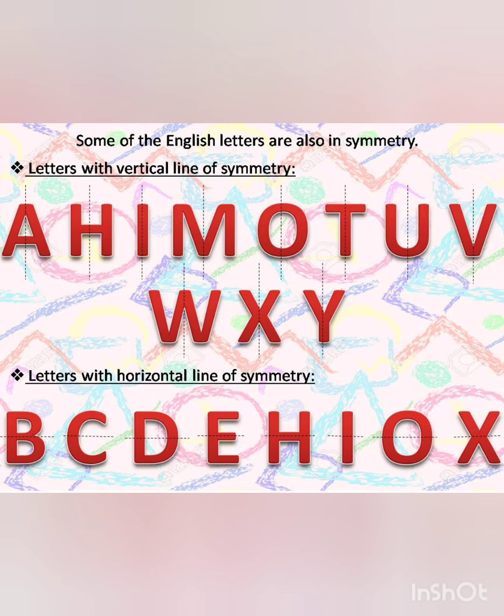All these letters have vertical line of symmetry. Now I will list the letters with horizontal line of symmetry: B, C, D, E, H, I, O, and X. These letters have horizontal line of symmetry, as you can see.